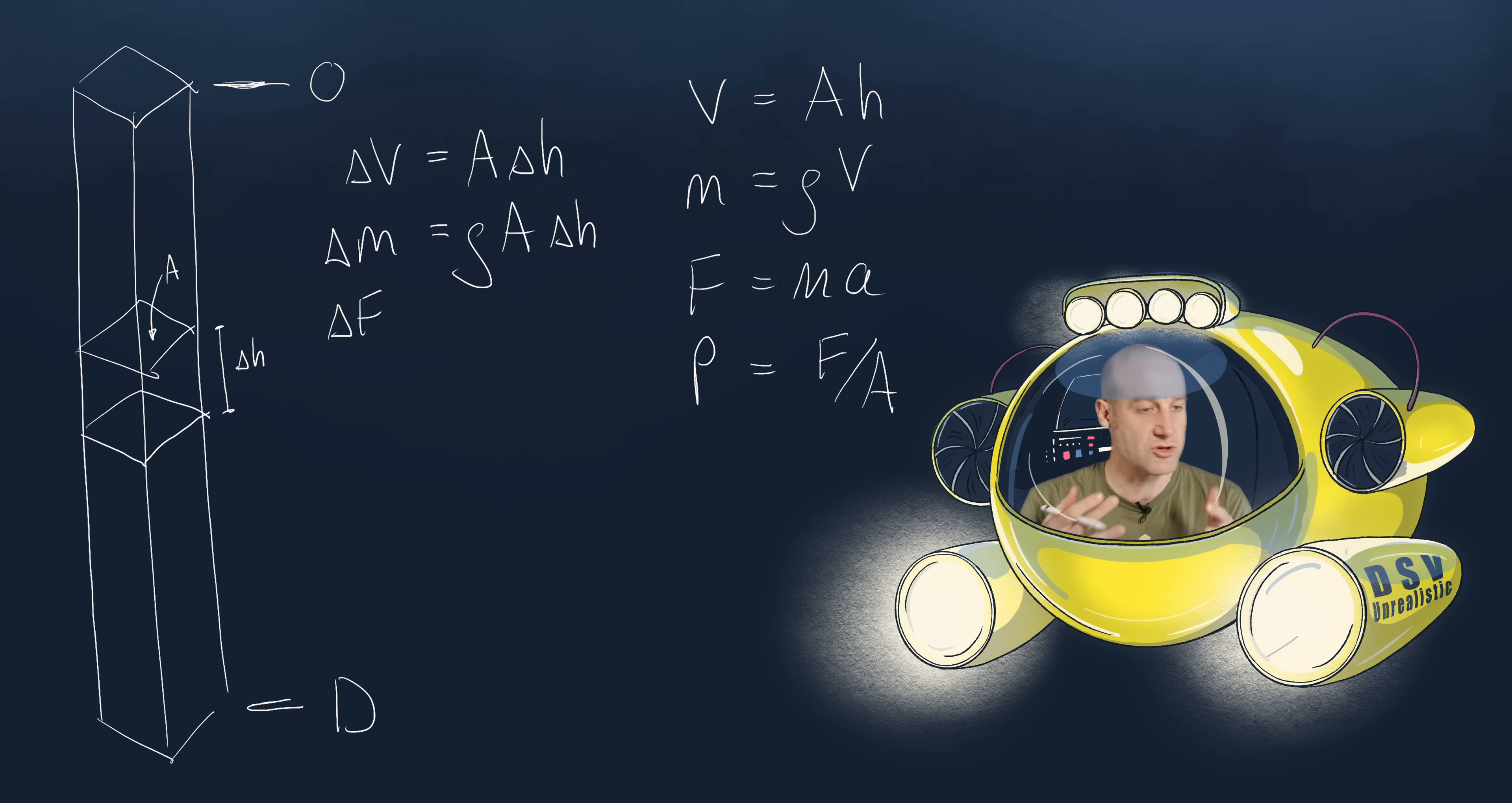Now we get down to business. So the small change in volume, which is, I just mean a small bit of volume. I say change because I'm imagining as you go down. But it's just a tiny chunk of volume equals whatever that area is times a little bit of the height. Which means that the little bit of mass represented by this one section equals whatever the density is times the area times a little bit of height.